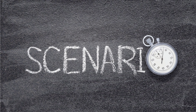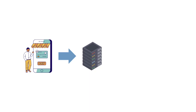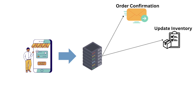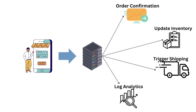Let's explore a couple of real-world scenarios where event-driven architecture is commonly used. First, e-commerce. Think about what happens when someone places an order on an online store. That one action triggers several things behind the scenes: an order confirmation is sent, the inventory is updated, a shipping process is started, and analytics log the sale. Each of these actions can be handled by a separate service, all reacting to the same event — 'order placed.' This is a perfect use case for EDA, allowing each part of the system to respond independently, scale as needed, and even recover from failure without affecting the rest.